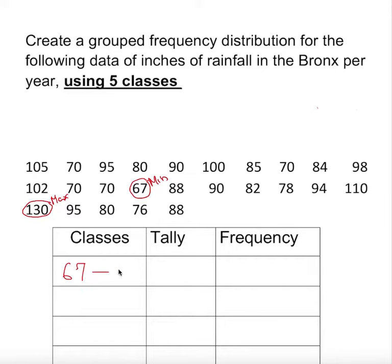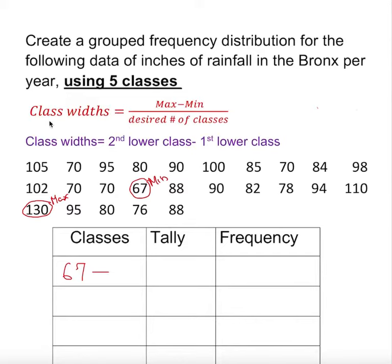Now 67 to where should I end my limit? We need a class width. We have to figure that out. There are two ways. If they say using classes, you use one way. If they give you the class width already, you do another. Let's do using five classes. We have to find the rules. Class width equals maximum minus minimum over desired number of classes.